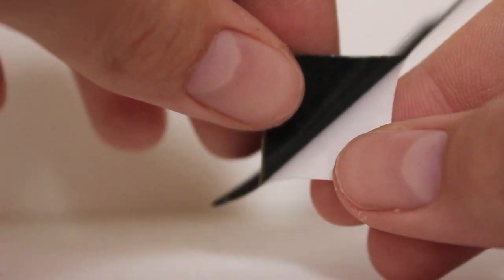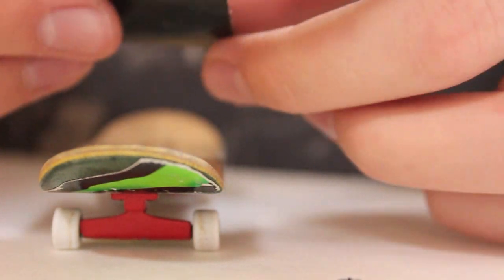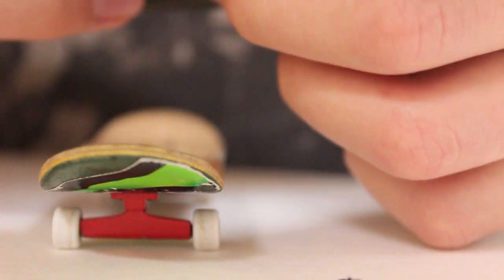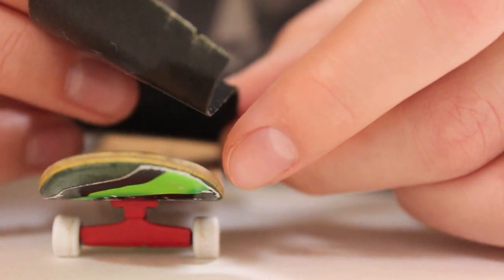Then cut a slit in your grip tape. Peel it off and stick it firmly on your fingerboard. Make sure there are no air bubbles, because that will make for some weird finger movements.